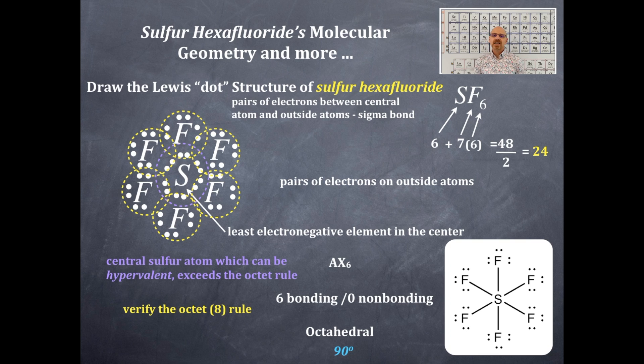Okay and then from this now we're gonna get the hybridization so we count the number of bonding domains or non-bonding domains around the central element. So let's count them. SP1, P2, P3, D1, D2. It's sp3d2 hybridized. Beautiful.